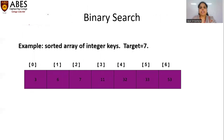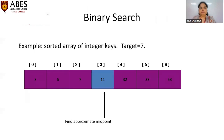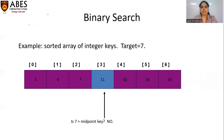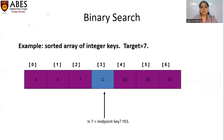In the example with a sorted array of integer keys, there are seven elements: 3, 6, 7, 11, 32, 33, 53, and the target value we are searching for is 7. We first find the approximate midpoint using the formula: lowest index plus highest index divided by 2, taking the floor value. The lowest index is 0 and the highest index is 6, so 0 plus 6 divided by 2 equals 3 — that is the approximate midpoint, which holds value 11. The target 7 is not equal to the midpoint value, and since 7 is less than 11, we search in the area before the midpoint.